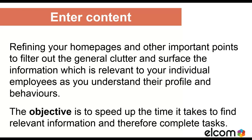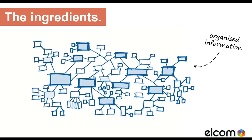In order to start content personalisation within your intranet, it's important to consider three key ingredients. The fundamental component is understanding your information. Without structured, well-organised information, it becomes very difficult to know what to surface and to whom. This starts with ensuring that content is organised and secured within a strong folder structure, and then ensuring that content is created and constantly being tagged, backed by a comprehensive taxonomy. The aim is to make your information as identifiable as possible for when it needs to be referenced.